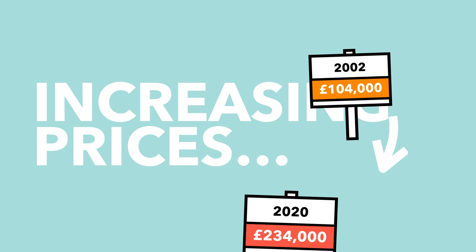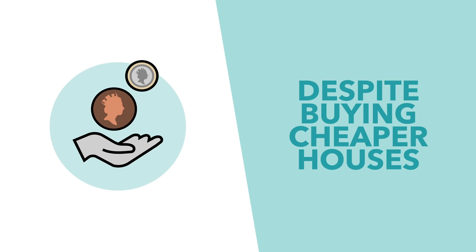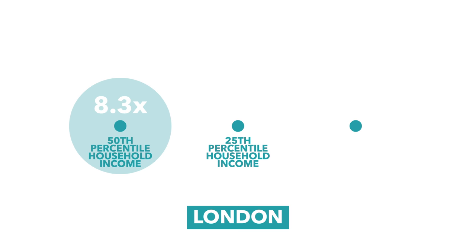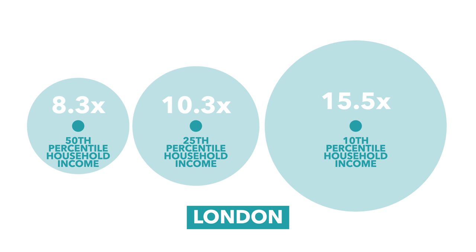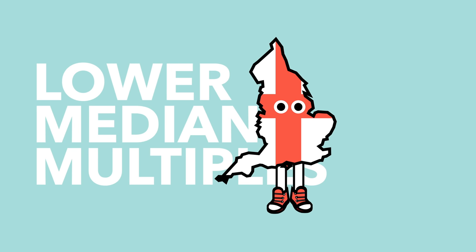Third, high house prices make housing most unaffordable for those on lower incomes, even though they buy cheaper houses. In London, the median house is 8.3 times the median household income. The 25th percentile house is 10.3 times the 25th percentile household income, and the 10th percentile house is a staggering 15.5 times the 10th percentile household income.